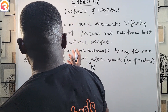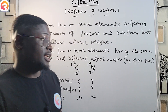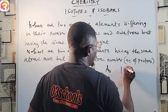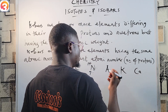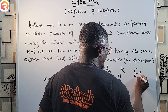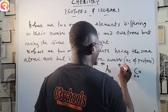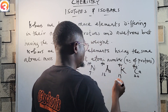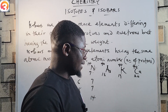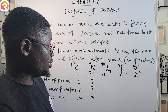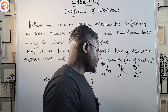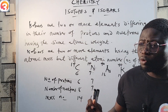Another example: argon, potassium, and calcium all have atomic mass 40 — atomic numbers 18, 19, and 20 respectively — but all have mass number 40. These are also isobars. Do not be confused about anything to do with isotopes and isobars.